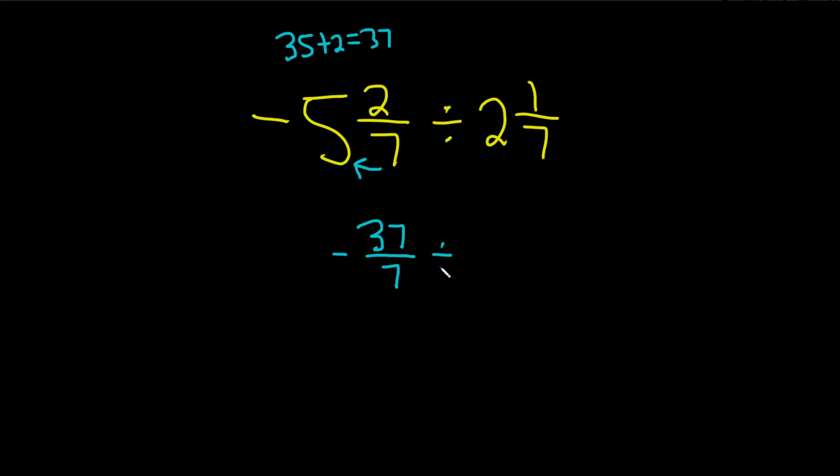Divided by, same thing here. 7 times 2 is 14. You add the top number. That gives you 15. So you write it as 15 over, and you just keep the bottom number, 7.